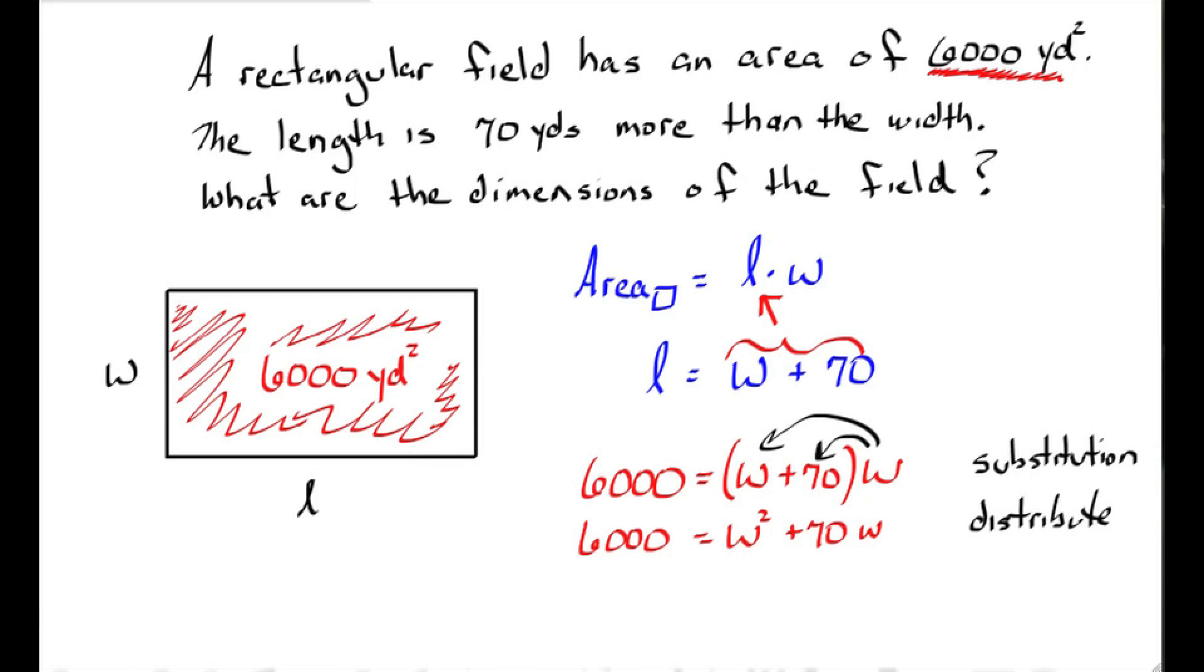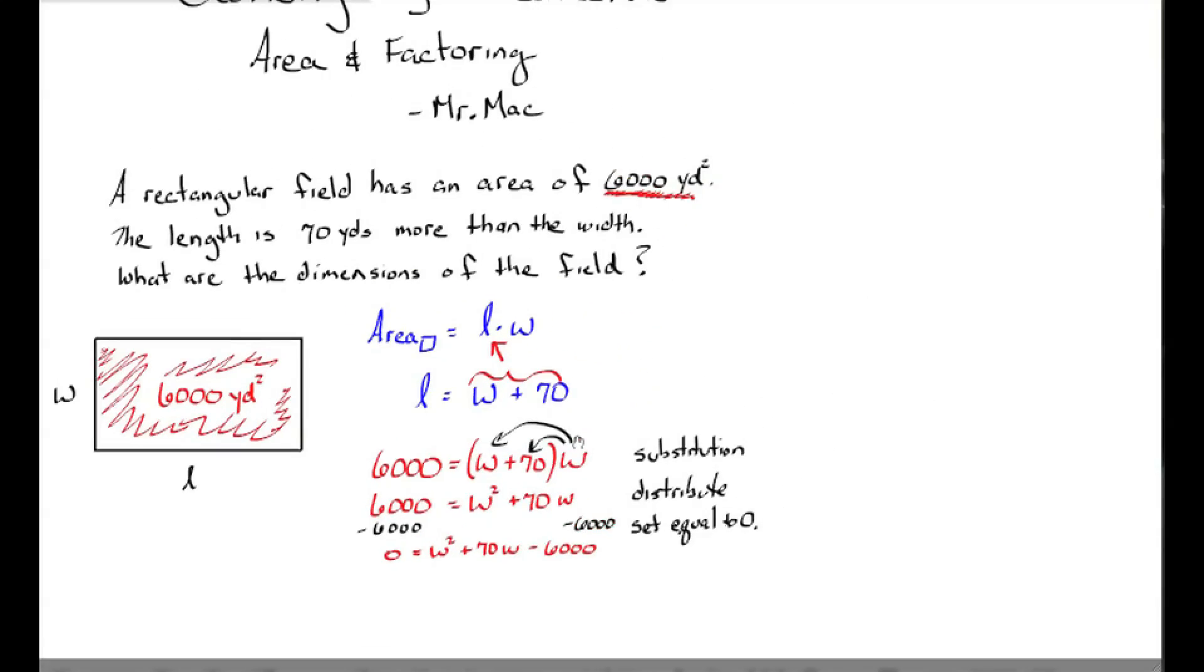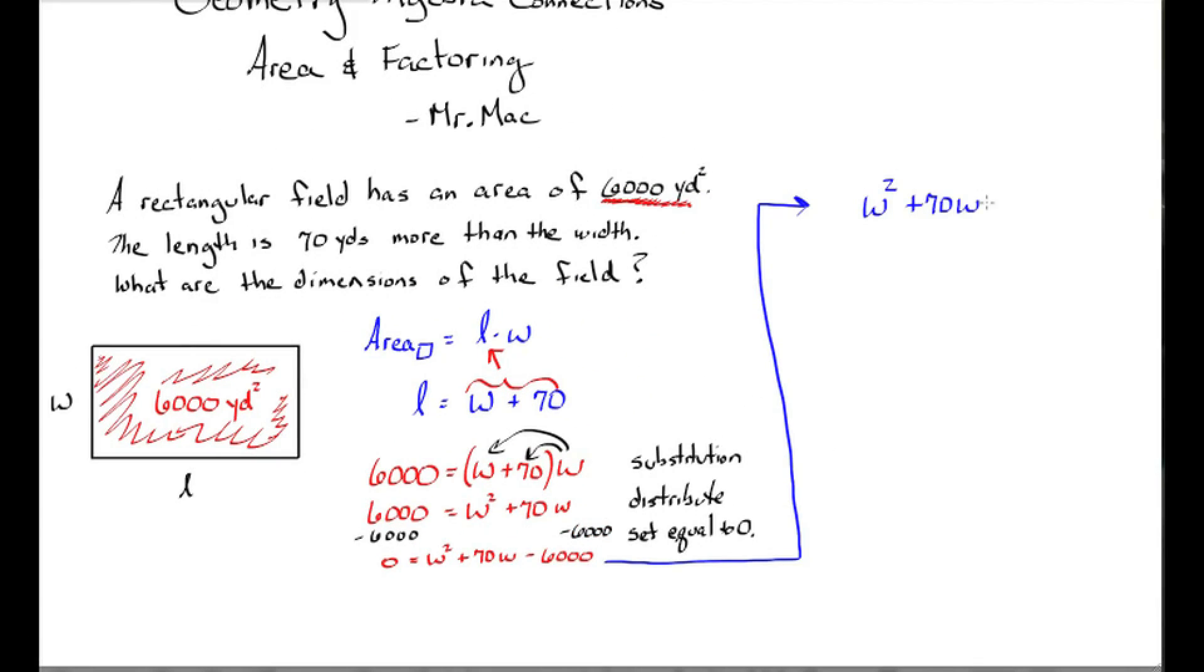And then I want to set this equation equal to zero, so I need to subtract 6,000 to both sides and I get w squared plus 70w minus 6,000 equals zero.